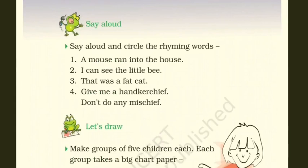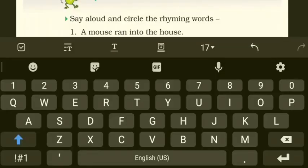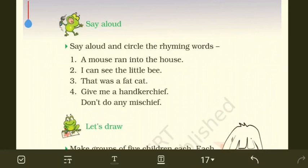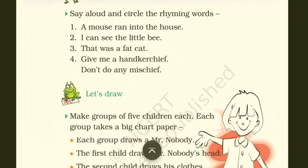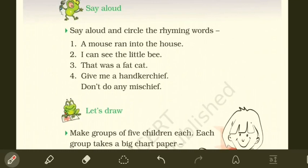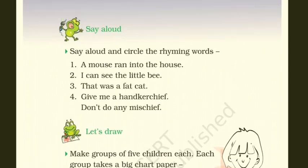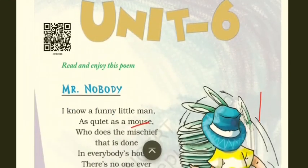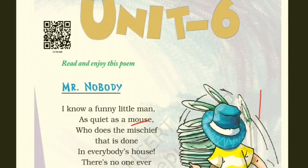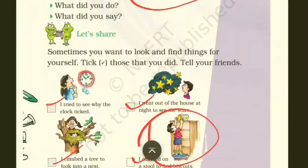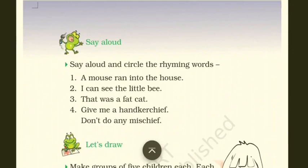Moving on to 'Say Aloud' — these words will be read aloud by me and then you repeat. In any poem, there are words that rhyme with each other — they have similar sounds. For example: may, day, play, say, we, be, etc. Such words are called rhyming words. Now let's read and find out if there are any rhyming words.